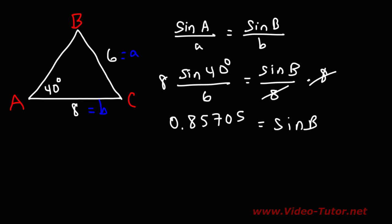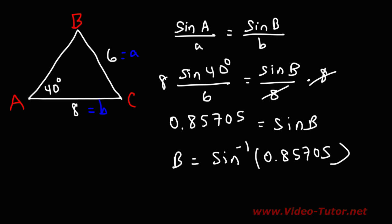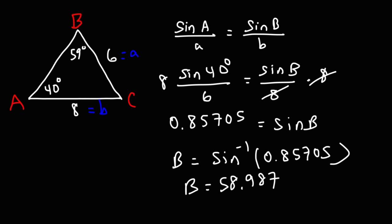Now we need to calculate the value of angle B. To do that, we take the inverse sine of both sides, so angle B is the arc sine of 0.85705. Make sure your calculator is in degree mode. If you type in inverse sine of 0.85705, you should get 58.987, which rounds to approximately 59 degrees.